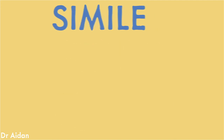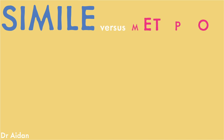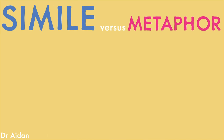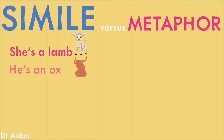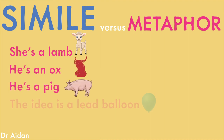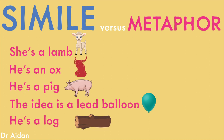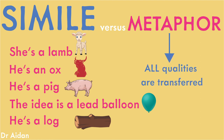Lastly, how is a simile different to a metaphor? Well, if we convert any of these similes to metaphors we would get: she's a lamb, he's an ox, he's a pig, the idea is a lead balloon, he's a log. We can immediately see that where the simile transfers one clear quality, the metaphor transfers all of the qualities of the things being compared, and then we have to choose the one that we think is the most likely.